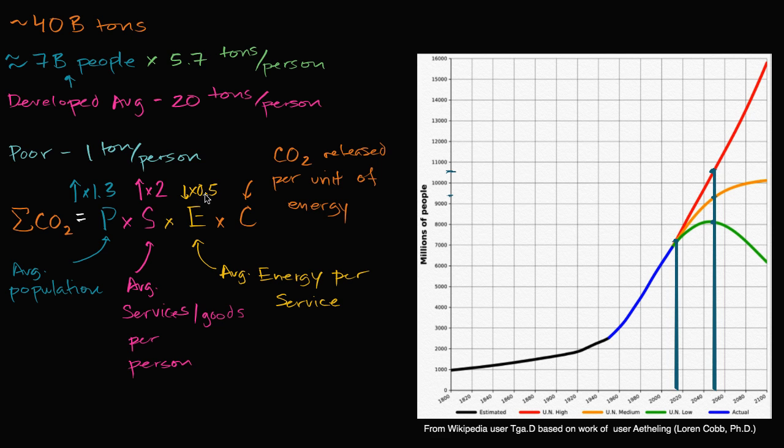And even if we were to get really efficient, if we were to decrease our energy used per service by 80%, or even 90%, you still have many tens of billions of tons of CO2 being released every year. So the only way that we're going to be able to get that, this thing down to zero, is if C, right over here, the CO2 released per unit of energy goes to zero. This needs to go to zero.